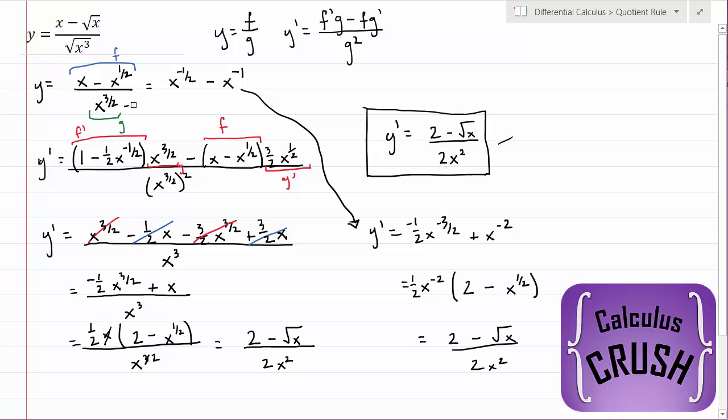If we had something like this on the bottom, well then you'd have to use a quotient rule because you wouldn't be able to divide them.